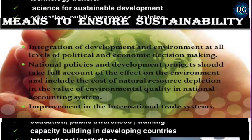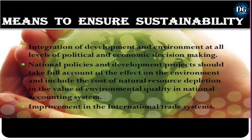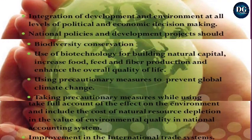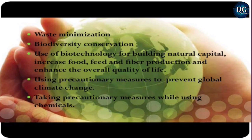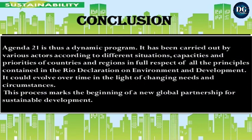Section 4 also covers international institutions, international legal and financial instruments, and information for decision making. Means to ensure sustainability include: integration of development and environment at all levels of political and economic decision making; national policies and development projects should take full account of effects on the environment and include the cost of natural resource depletion in national accounting systems; improvement in the international trade system; minimization of biodiversity loss; use of biotechnology for building natural capital; increasing food, feed, and fiber production; and taking precautionary measures to prevent global climate change and manage chemicals.